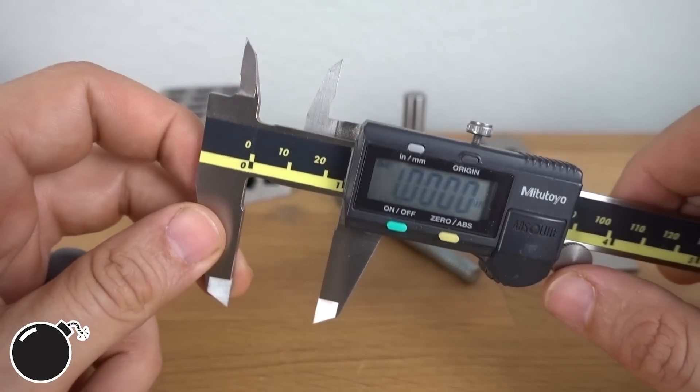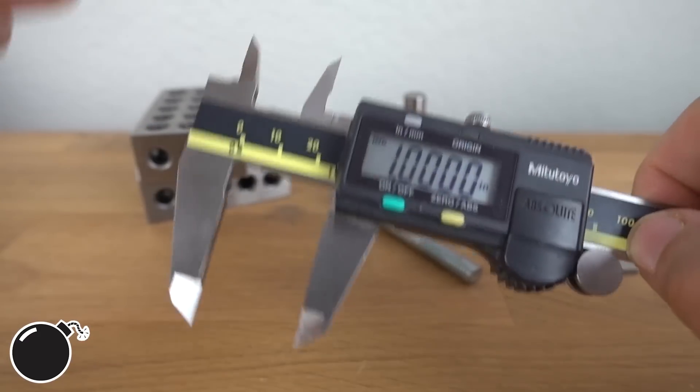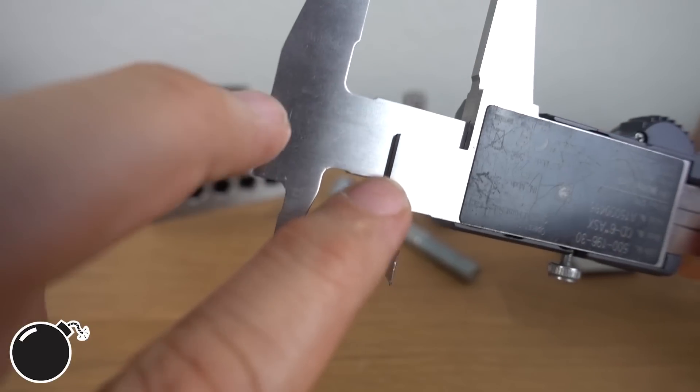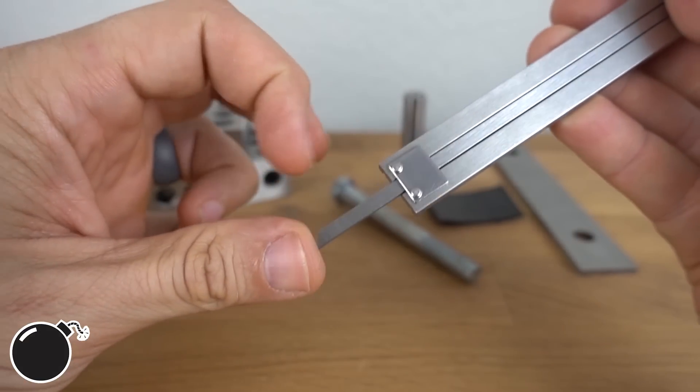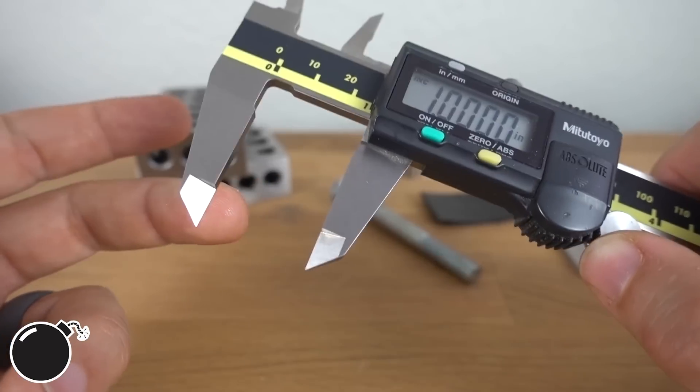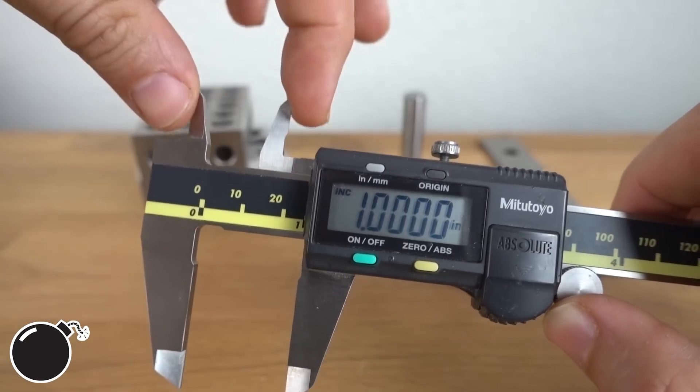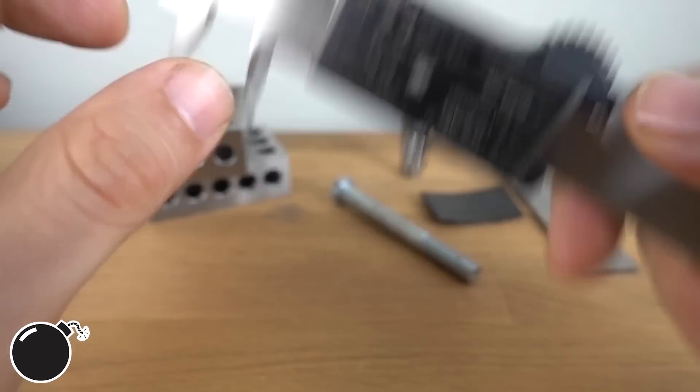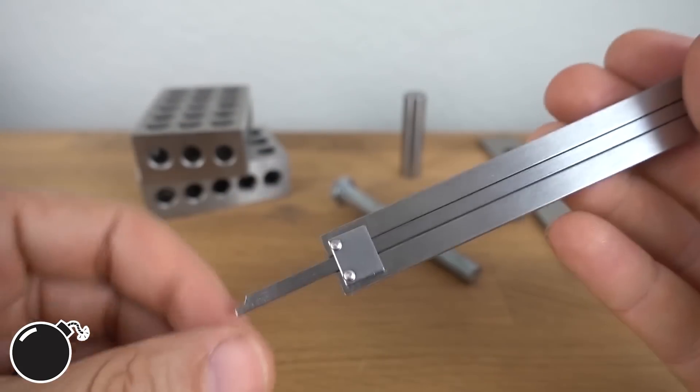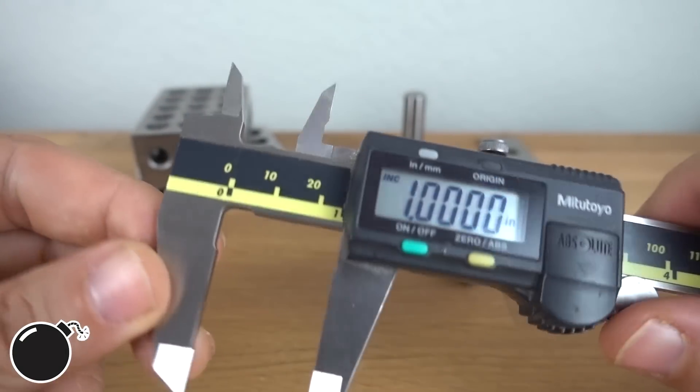Second, you need to know all the places on the calipers that you can use to measure. If the screen shows one inch, then it's one inch between these jaws, it's one inch around these jaws, it's one inch between the step here and the end of the calipers, and it's one inch between the end here and this end of the calipers. Which reference you use is up to you depending on what you think will get you the most accurate measurement. But in general, here is where you'll measure outer diameters, inner diameters, step heights, and hole depths. Personally, I use the jaws most of the time, these second, then the depth measurement, and I hardly ever use the step.